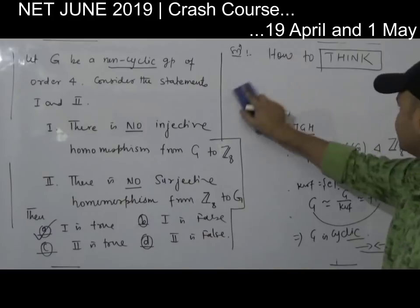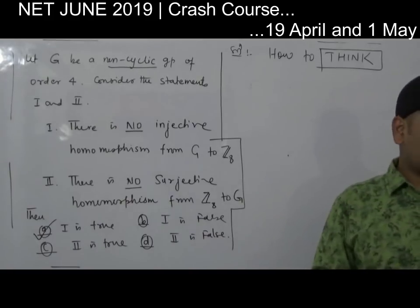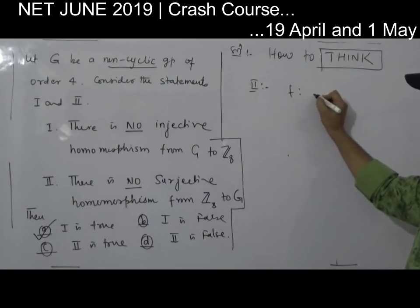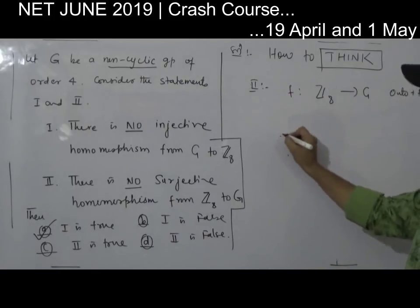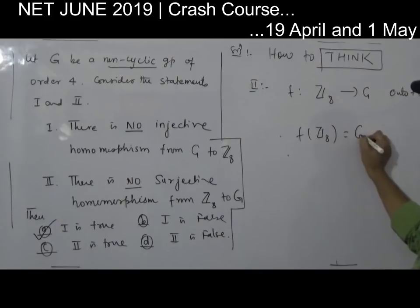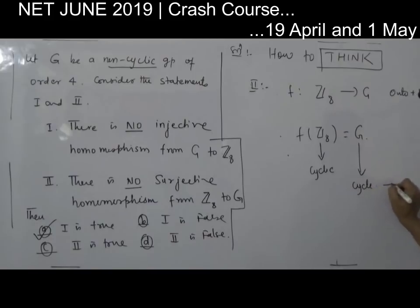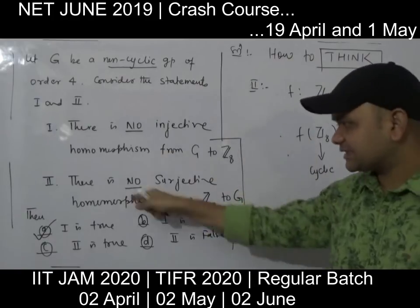Now let's go to the second statement. There is no surjective homomorphism from Z8 to G. Suppose an onto homomorphism F exists. Then F(Z8) equals G. But Z8 is cyclic, and we have just proved that the image of a cyclic group under a homomorphism is cyclic. That implies G is cyclic — which is again a contradiction, since G is given as non-cyclic. Hence there is no surjective homomorphism from Z8 to G. Statement 2 is also true.